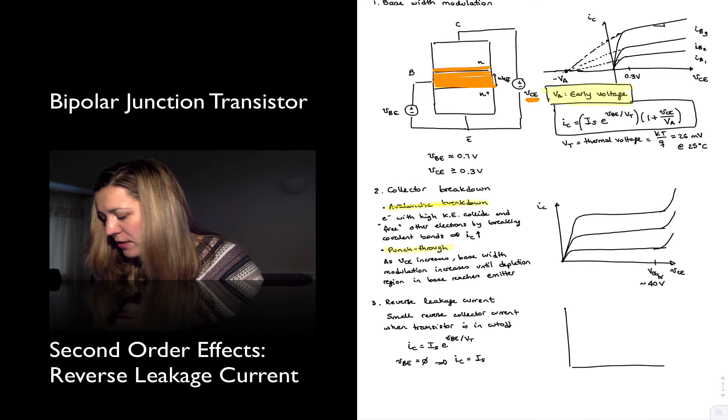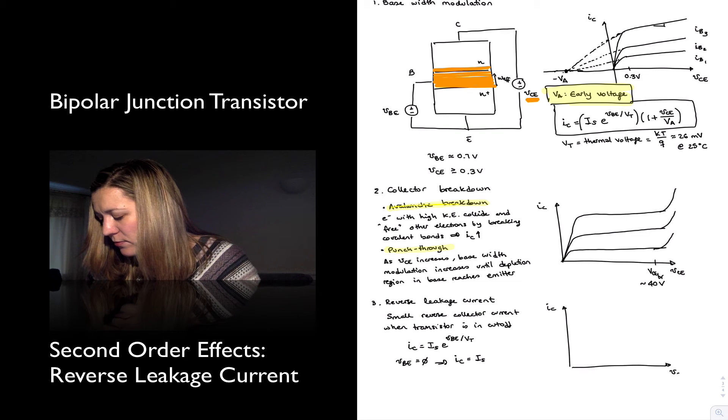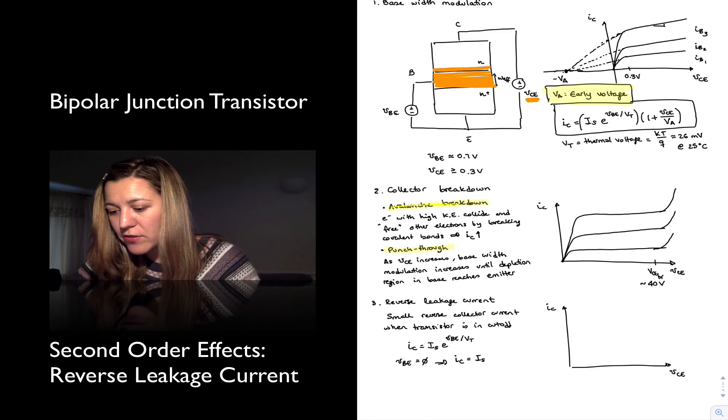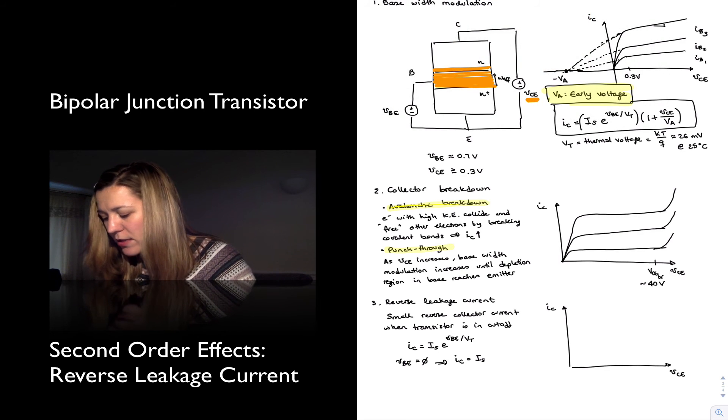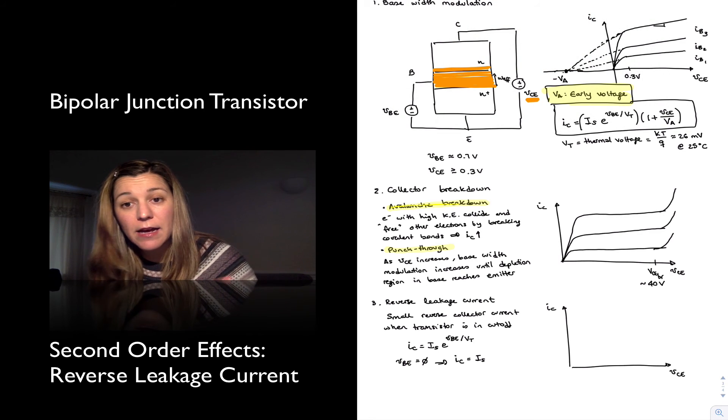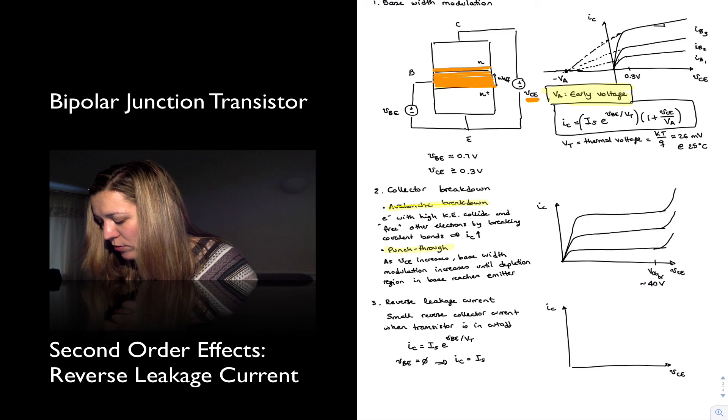So if we were to represent it in our IV characteristic, that will just mean that instead of having the IC equals zero current line for the cutoff, we will instead have